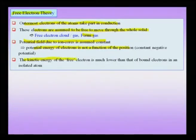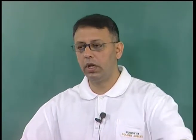Though the electrons move around in the potential of ion cores, that potential is assumed to be constant — meaning there is no spatial variation of the potential in which these electrons are moving. It is also noted that the kinetic energy of the free electron is much lower than that of bound electrons in an isolated atom. This simplified free electron theory is able to explain many simple concepts, and we will slowly build towards the region where we need to transcend this free electron theory into what is called the band structure, which is needed to explain the conductivity of semiconductors and insulators.